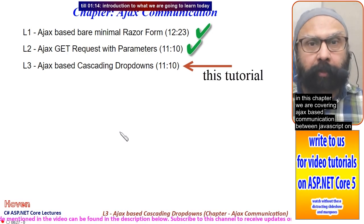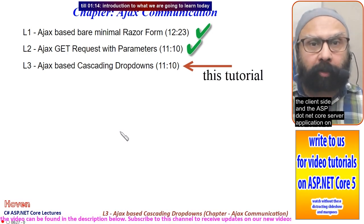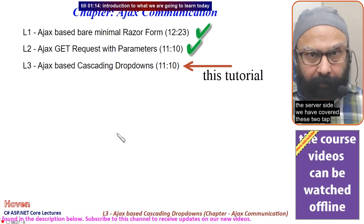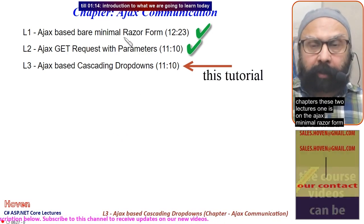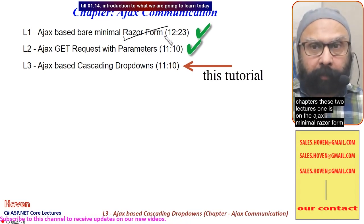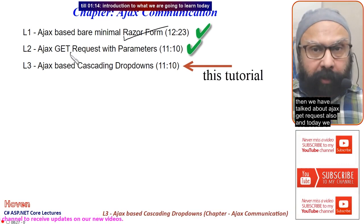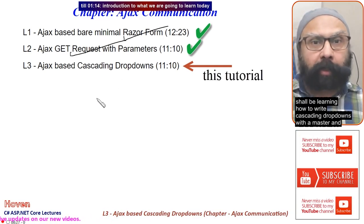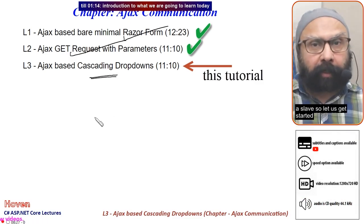This series covers AJAX-based communication between JavaScript on the client side and an ASP.NET Core server application. We have already covered the AJAX minimal Razor form and AJAX GET requests. Today we will learn how to write cascading dropdowns with a master and a slave.